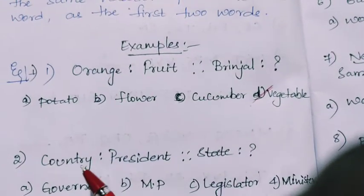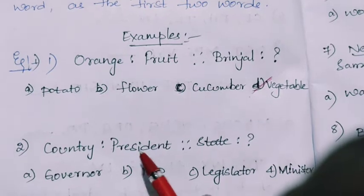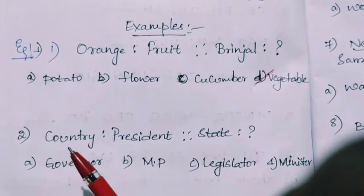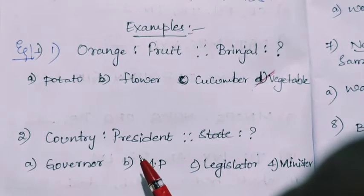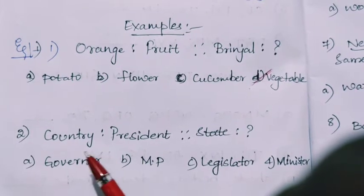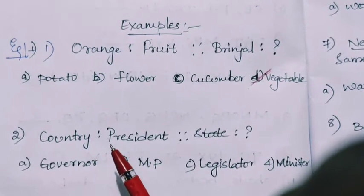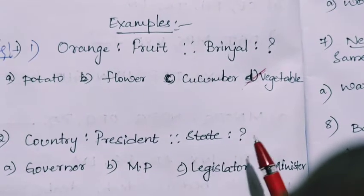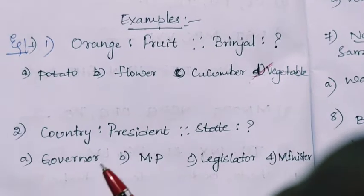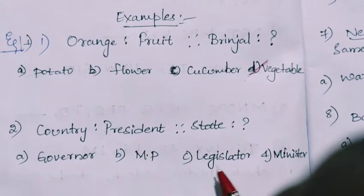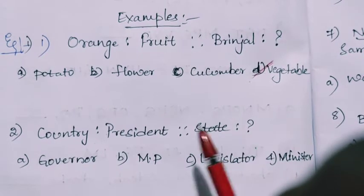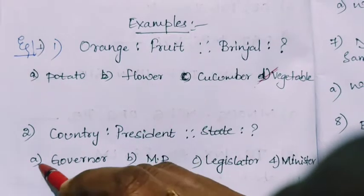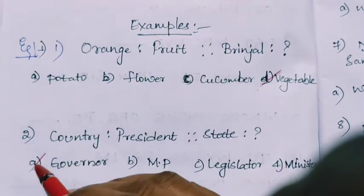Next question. Country is to president and state is to what? So the nominal head of the country is the president. We know the relationship here. The nominal head of the country is the president, and for state, who is the head? Nominal head. So governor, MP, legislator, or minister. The nominal head for state is the governor, so this will be the answer.